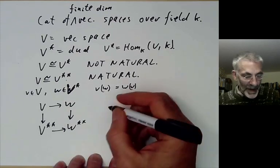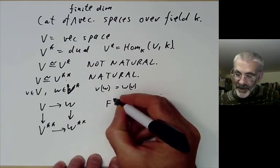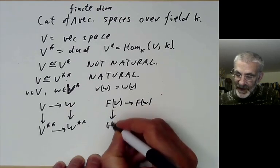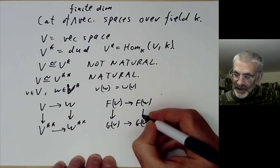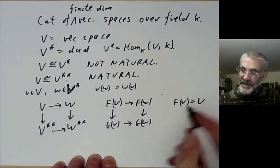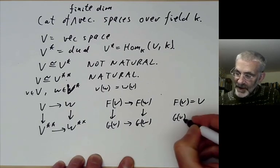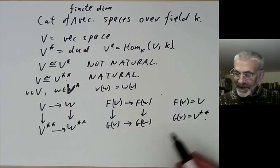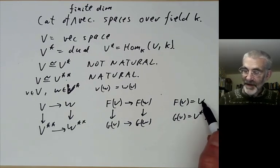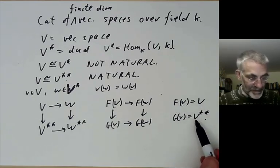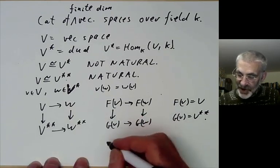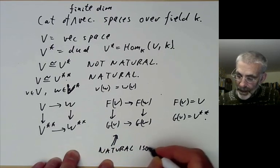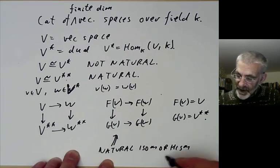We can write this as follows. We have a diagram: FV maps to FW, GV maps to GW, where FV is the trivial functor taking V to itself and GV is the double dual functor. This gives an example of a natural transformation — in fact a natural isomorphism M from F to G — from the identity functor to the double dual functor.